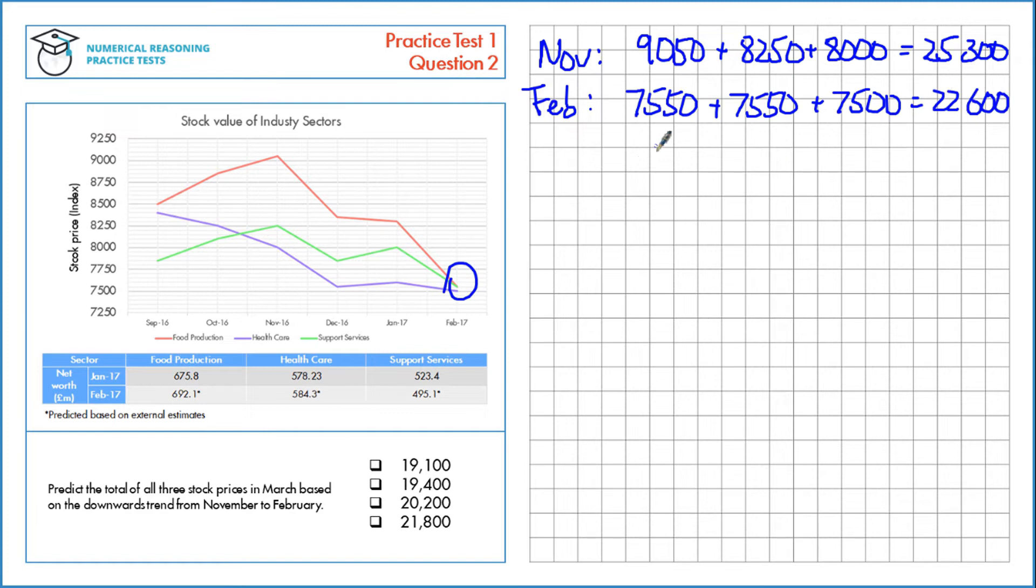Let's calculate the percentage change between these two then. So we have the new value here, subtract the old value, divided by the old value.